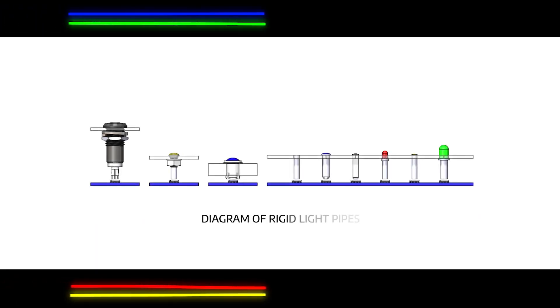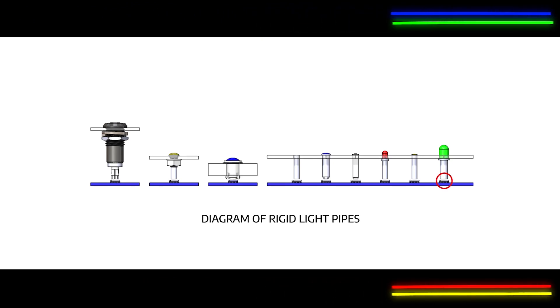When a panel press-fit rigid light pipe is located over the LED, it allows for a certain amount of light bleed at the base of the light pipe.